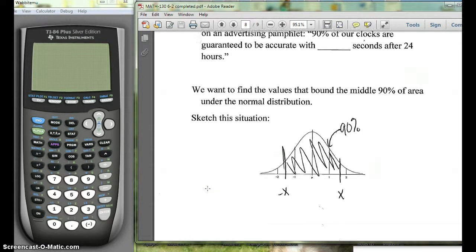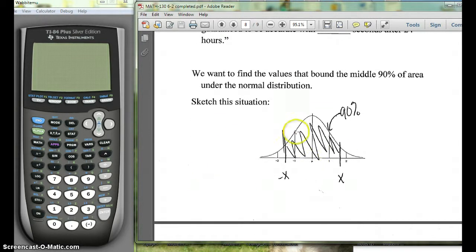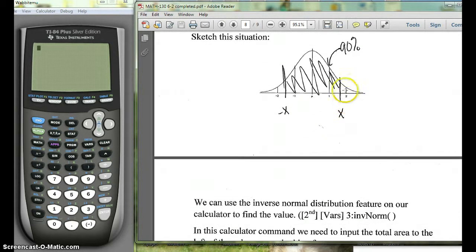So first we need to figure out we're trying to find the bounds for the middle 90% of the area. Now what our calculator wants to know is how much area is to the left of this upper value.